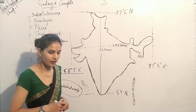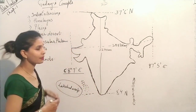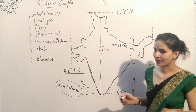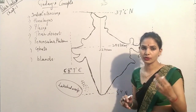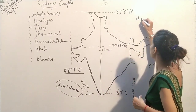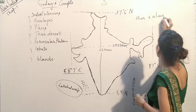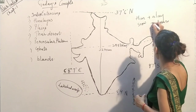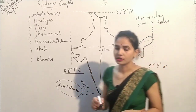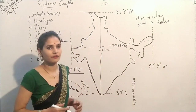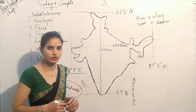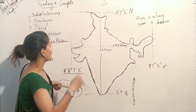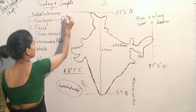Let's proceed to the next concept: the Himalayas. The Himalayas are basically comprised of two words — 'him' plus 'alaya.' Him means snow and alaya means house, so Himalayas means 'house of snow.' The Himalayas are always covered with glaciers, which are the source from which your rivers originate.